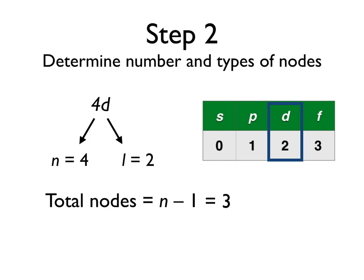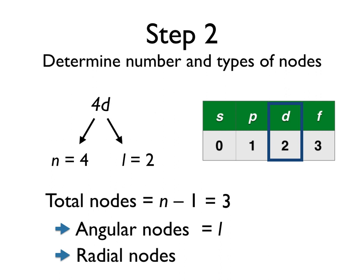Recall that there are two possible types of nodes, angular nodes and radial nodes. The angular nodes are always equal to the angular momentum quantum number, l, which in this case is 2.